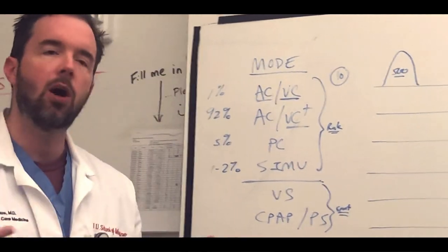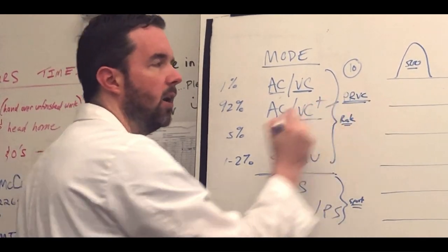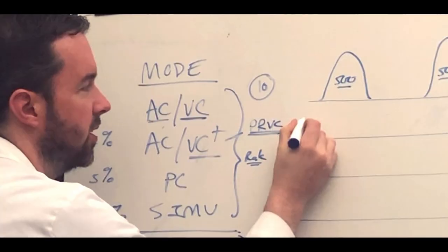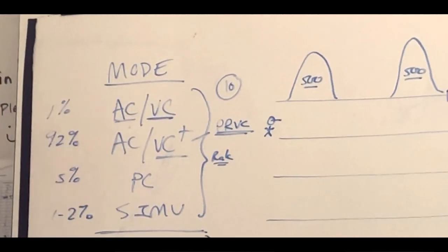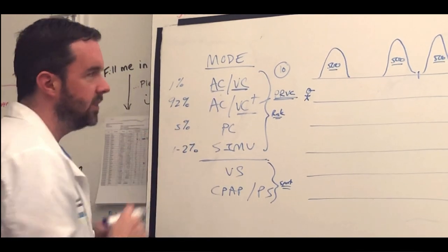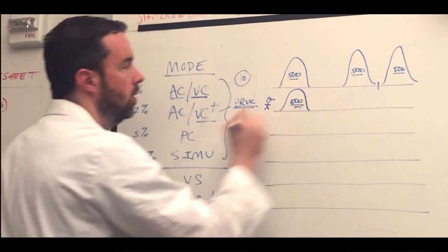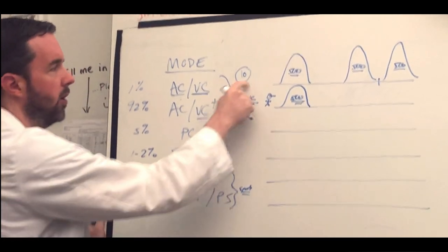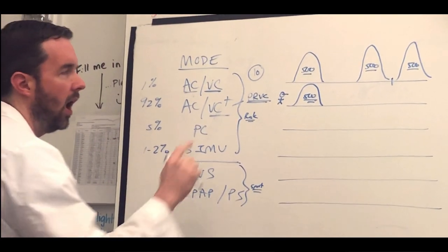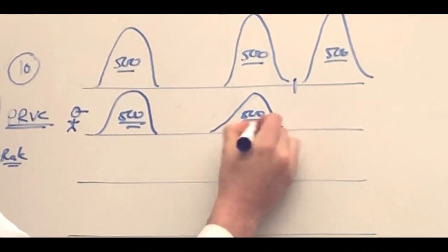Some manufacturers call this PRVC, I'm going to write that down, pressure regulated volume control. They are pretty synonymous depending on the vent manufacturer you use. In PRVC, it's like there's a little mini RT living inside the vent, and the RT says, all right Dr. Carlos, you set ACVC plus, I know what you want. You want 500 cc's because you set that volume, and you want a rate of 10. I'm going to work with you here because I'm your favorite little mini RT.